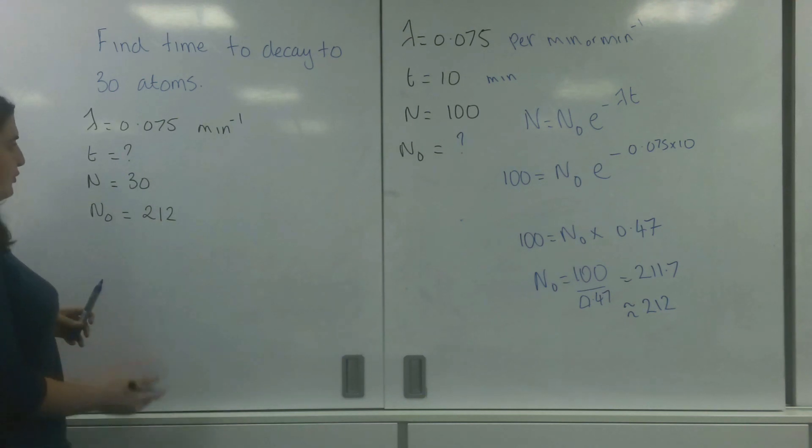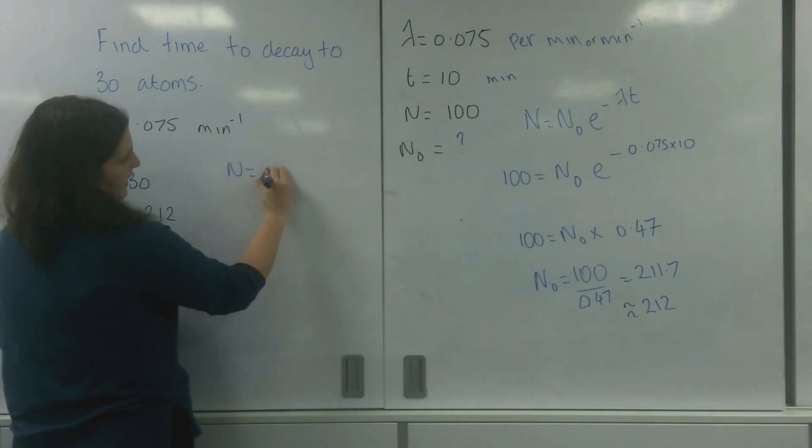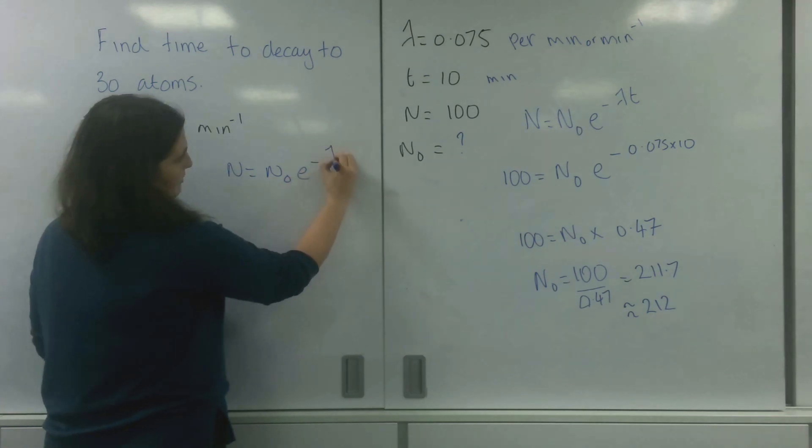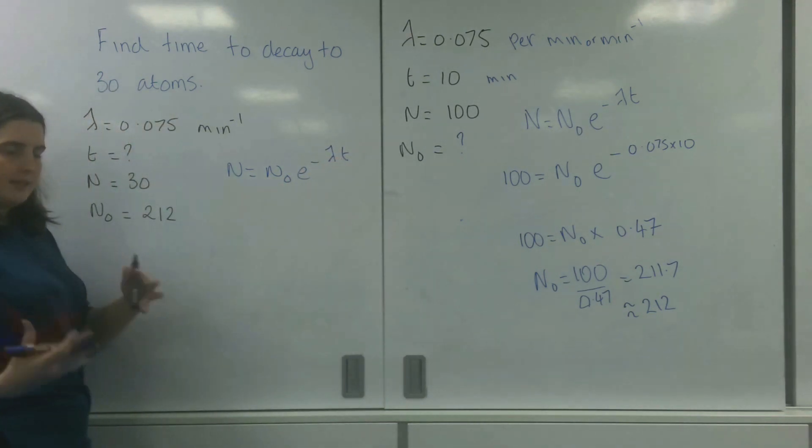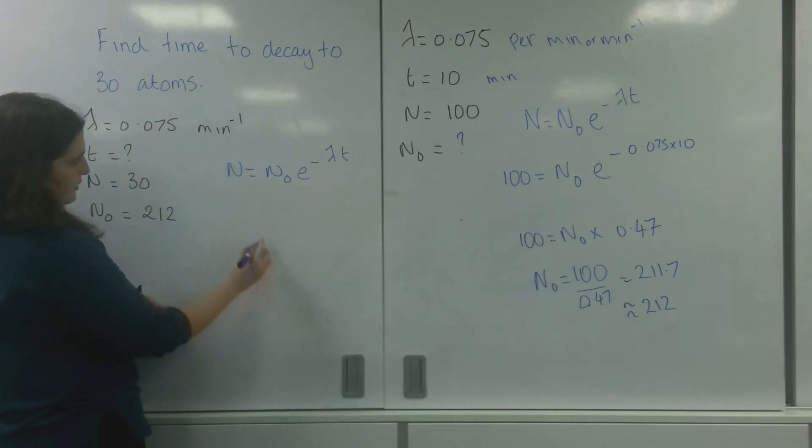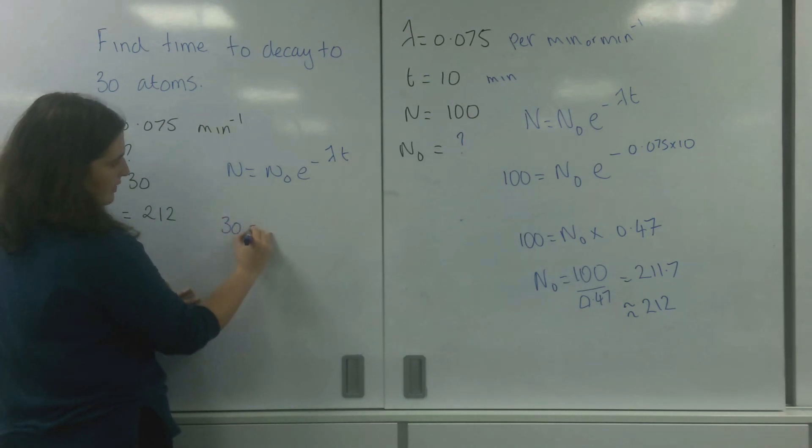So first of all, I'll write the formula. n equals n naught e to the minus lambda t. I'm going to fill in the information I know. So 30 equals 212 e to the minus 0.075 t.